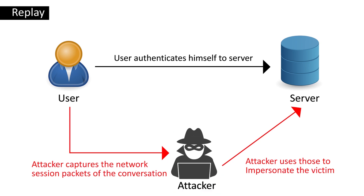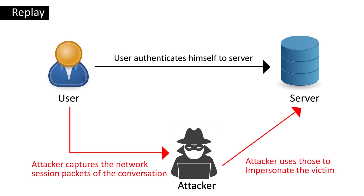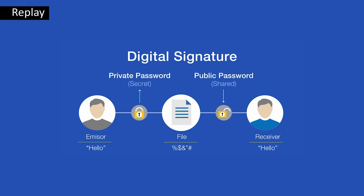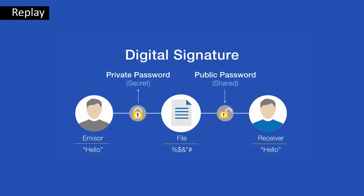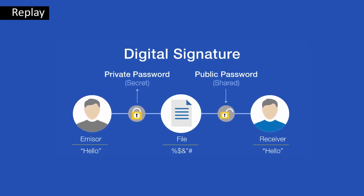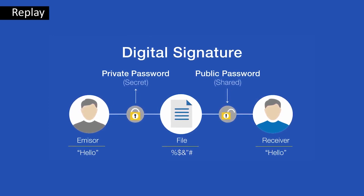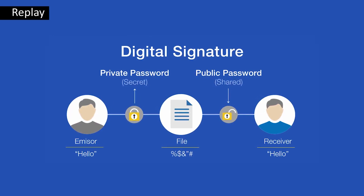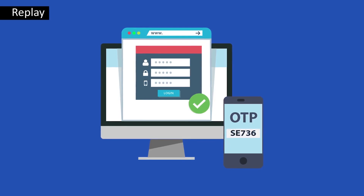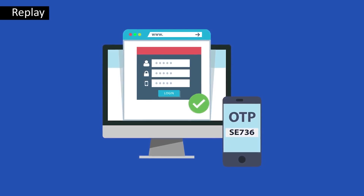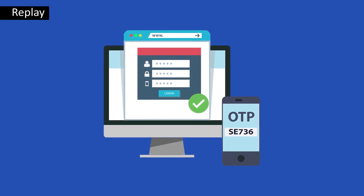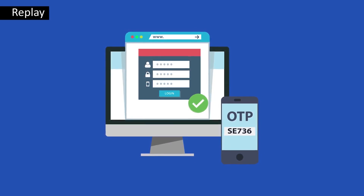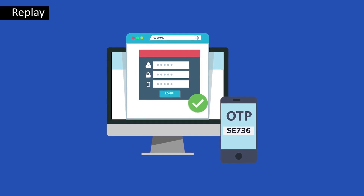Unless mitigating steps are taken, these kinds of attacks are repeated and the user or victim generally assumes that all transactions are done in a legitimate manner. Using digital signatures with timestamps can help to stop these kinds of man-in-the-middle attacks. Depending on the nature of the application, providing the option of a one-time password can help to stop unwanted eavesdropping when a client and server are communicating during a session.